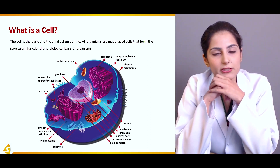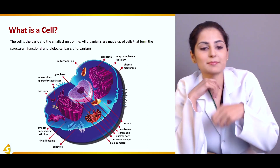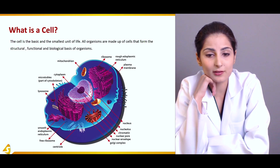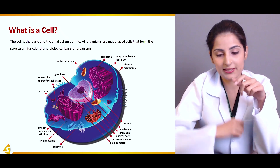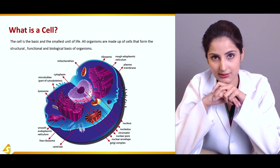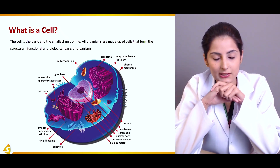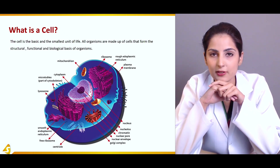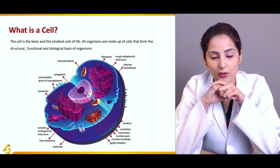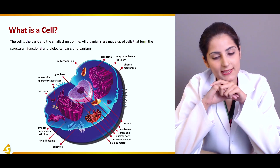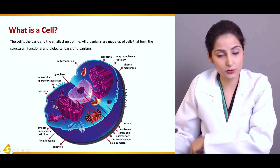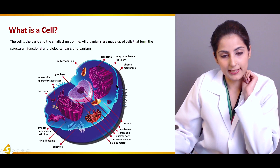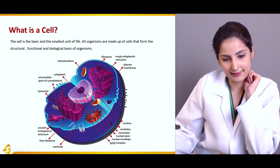Now let us revise our knowledge about the cell. It is the basic and the smallest unit of life. We already know that everything is made up of cells and everything that happens inside our body is controlled by cells. It forms the structural, functional, and biological basis of organisms. As you can see in this diagram, this is the outline of the cell which is known as the cell membrane, and these are the different kinds of organelles that are present inside the cell.